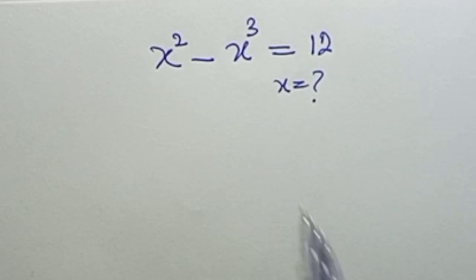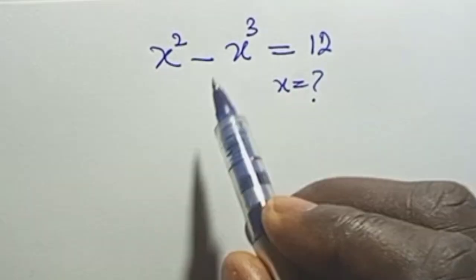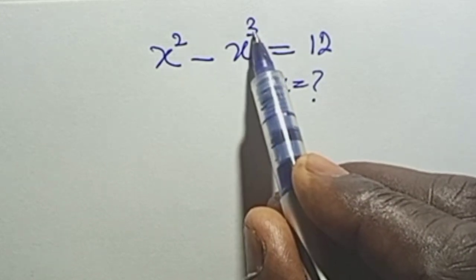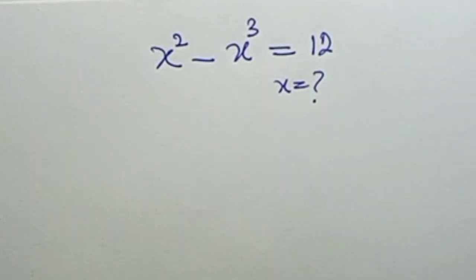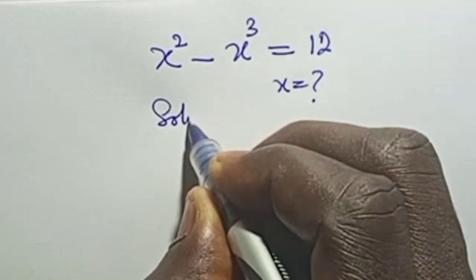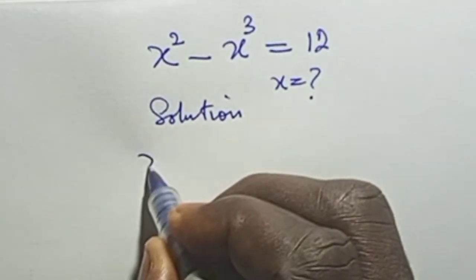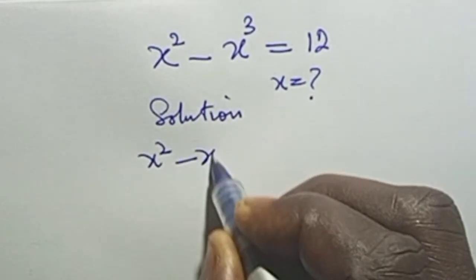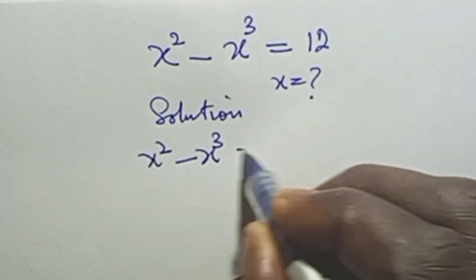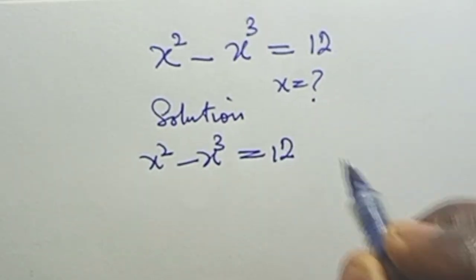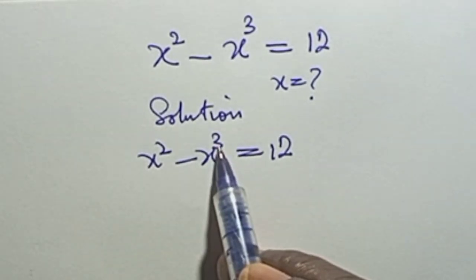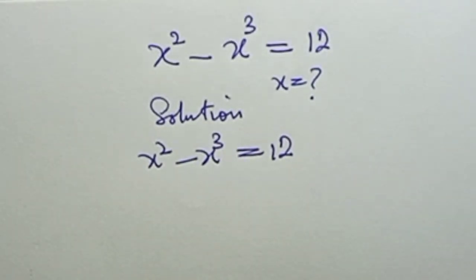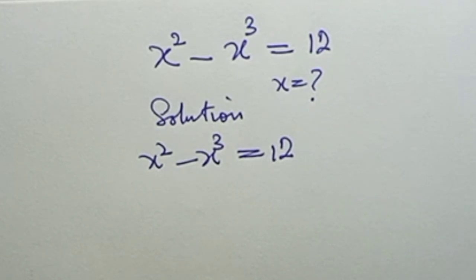Hello everyone. Today we have s raised to the power 2 minus s raised to the power 3 equals 12, and s is the unknown. This is a typical polynomial equation with the highest power of 3 — that's a cubic polynomial — and we are expected to find three answers from here.